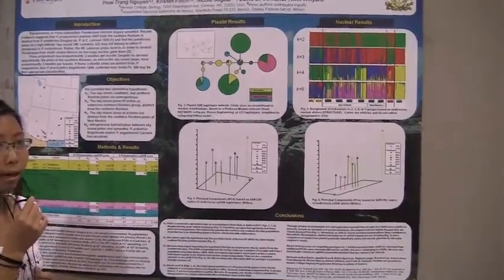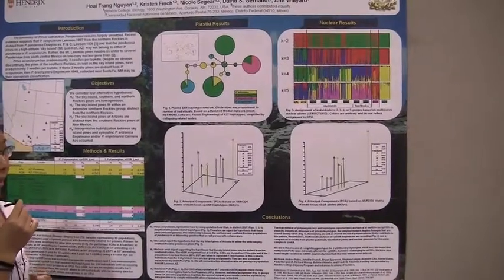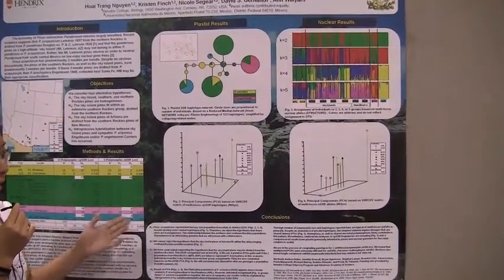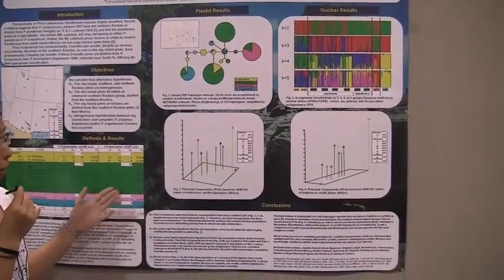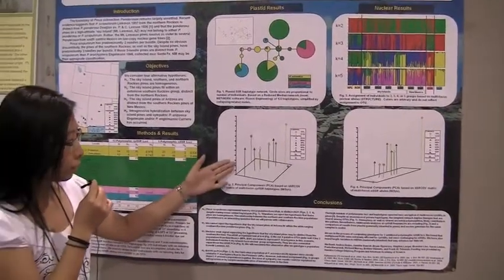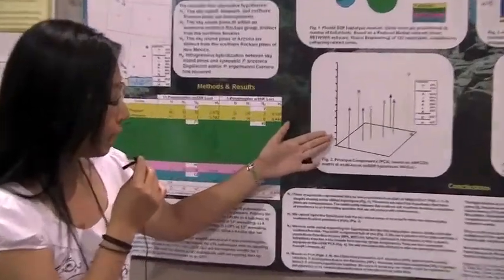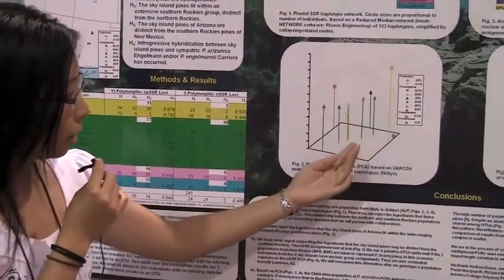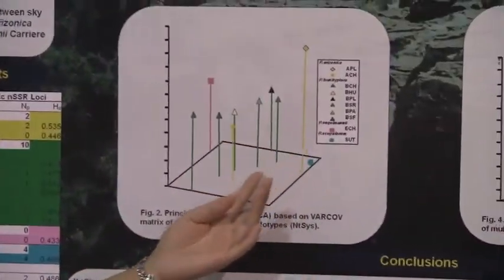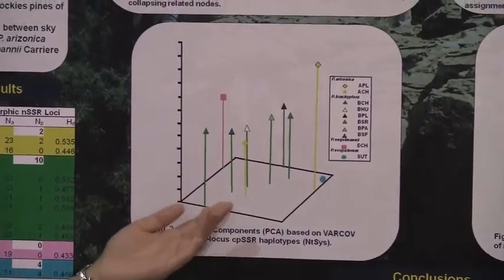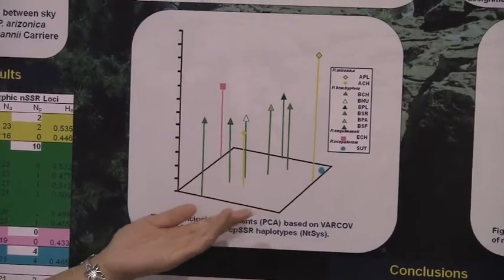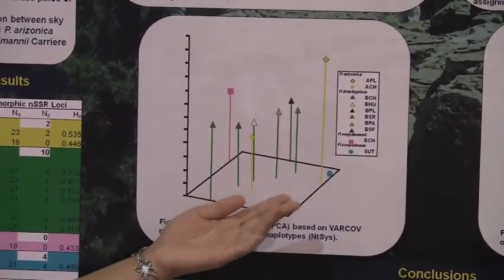Second, we do not have very clear evidence saying that the Sky Island population is separated from the population from New Mexico. Like in figure 2 with the chloroplast PCA, the Sky Island population is grouped together with the New Mexico, so this population may belong in this range.